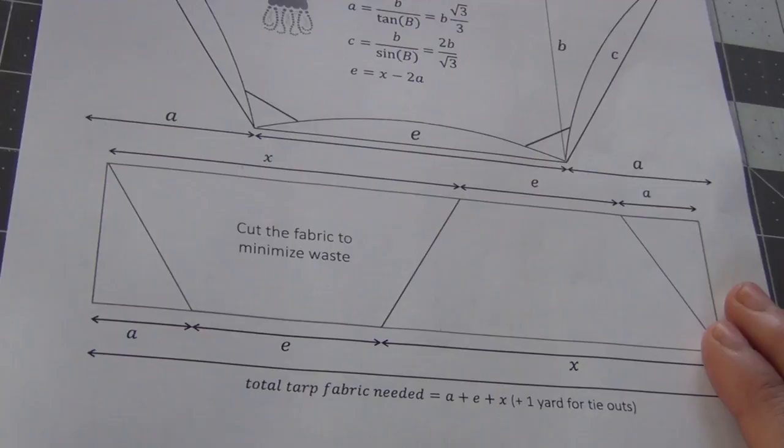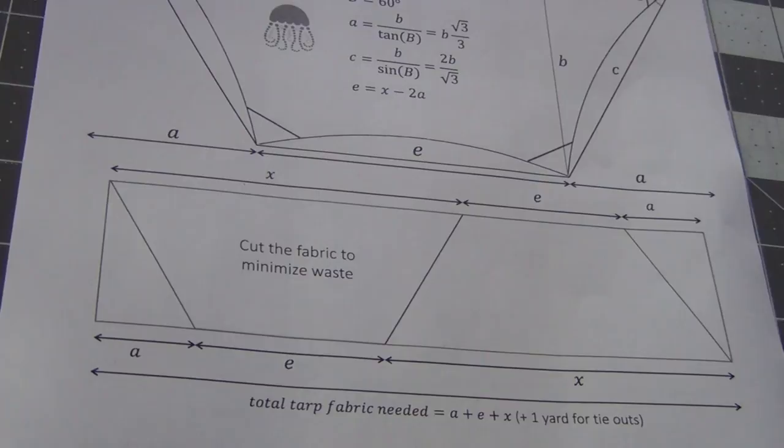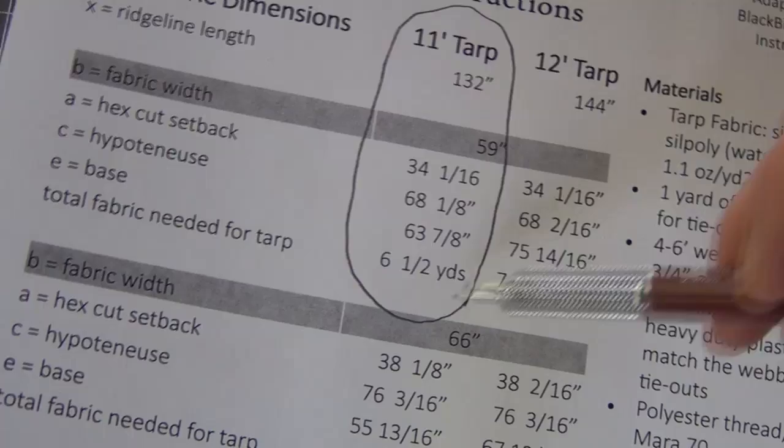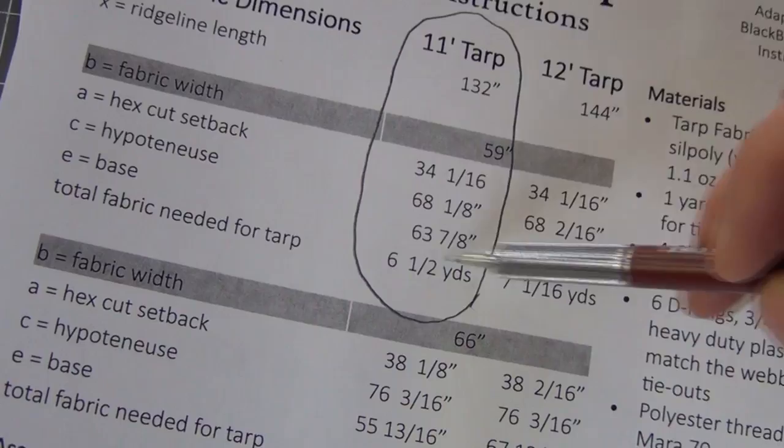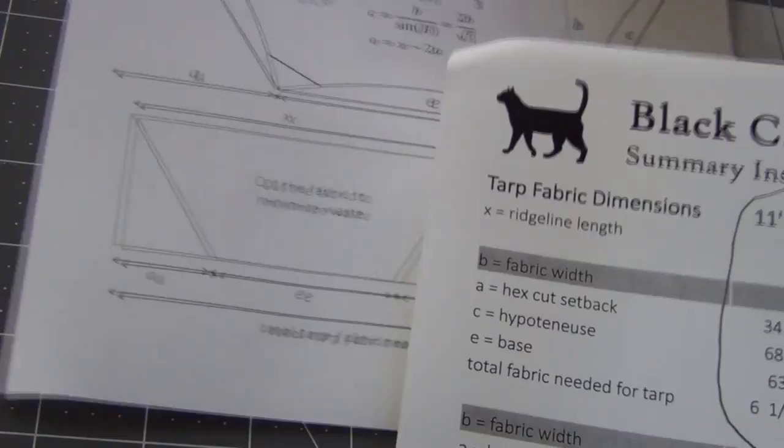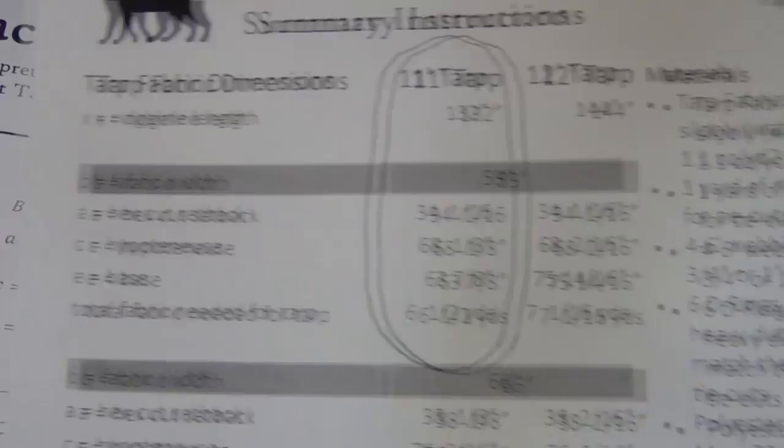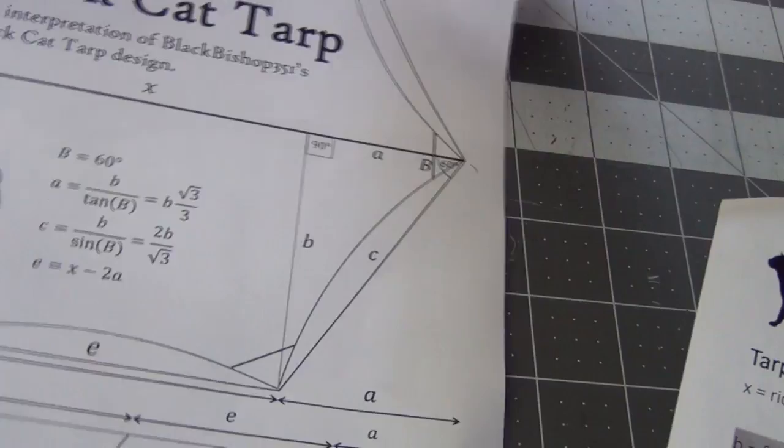What I have here is a diagram of the layout on fabric if you want to conserve your fabric. So my fabric is 59 inches wide and I am making an 11 foot tarp, so this is the set of measurements I'm going to use. The amount of fabric I need for this project, the minimum amount, is six and a half yards. And so how I would cut that is I've got my line A that is my hex cut setback. That's this amount here that tells me how deep this angle needs to be. That's 34 and 1/16 inch, so I can transfer those numbers here. And then that's also this number here.